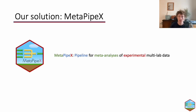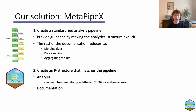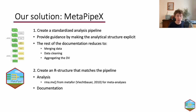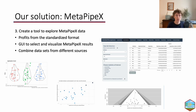So our solution to these complications is MetaPipeX. To break down the name quickly: it is a pipeline for meta-analyses of experimental data, and these make up more than 50% of currently published direct replication multi-labs. The framework consists of three components: first, a standardized analysis pipeline which provides guidance to make the analytical structure more explicit and reduces documentation effort; second, an R package that matches this pipeline, analyzes data, and creates standardized documentation at different levels of aggregation.